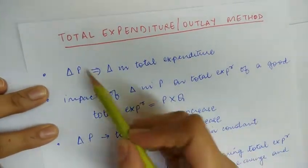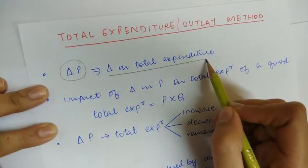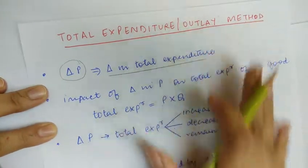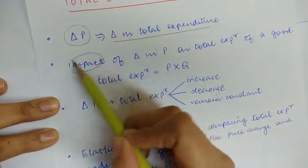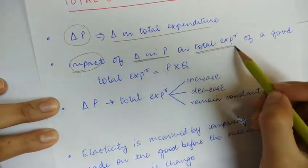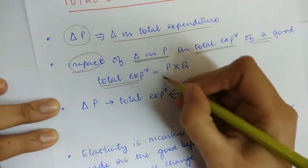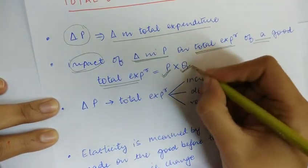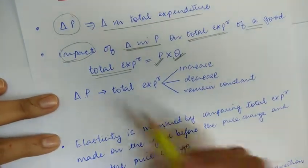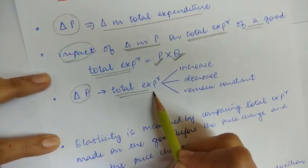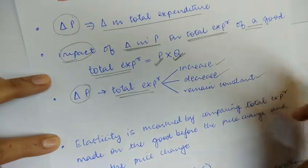It is generally observed that a change in the price of a commodity will cause a change in the total expenditure incurred on its purchase. Under the expenditure method, we study the impact of the change in price on the total expenditure of a good. Total expenditure is equal to the price of the commodity multiplied by the quantity purchased. With a change in price, total expenditure can change in three ways: it can increase, decrease, or remain constant.